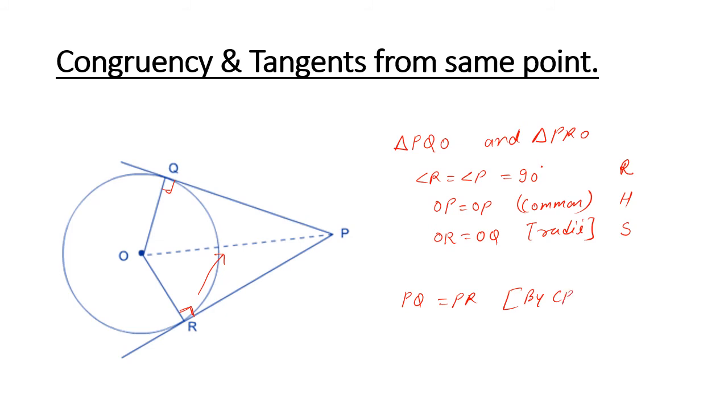So by RHS our triangles are congruent. So now we can take PQ is equal to PR by CPCT which is the corresponding parts of congruent triangles. So using this criteria like RHS right angle hypotenuse side we can prove these two triangles congruent and we can take out that the length of the tangents drawn from the same external point are equal. Also you can say that this angle P is being bisected. Also you can say this angle O is also bisected. So these all can be used when you will solve the questions of this chapter.